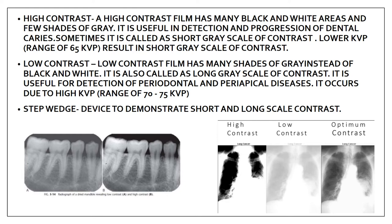We have three scenarios: the film can have high contrast, low contrast, or the optimum contrast. High contrast is when the film has many black and white areas and very few shades of gray. Here is an x-ray of a chest — this film is having high contrast, so it has black and white color and very little gray. This high contrast film is useful in detection of dental caries, such as how the progression and detection of dental caries occurs. It is also called a short gray scale of contrast, because you have very little gray color.